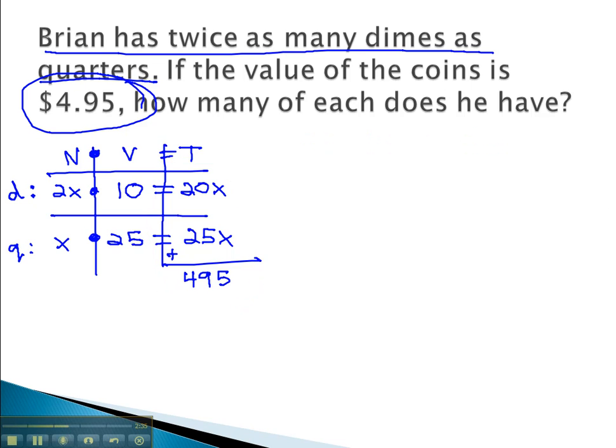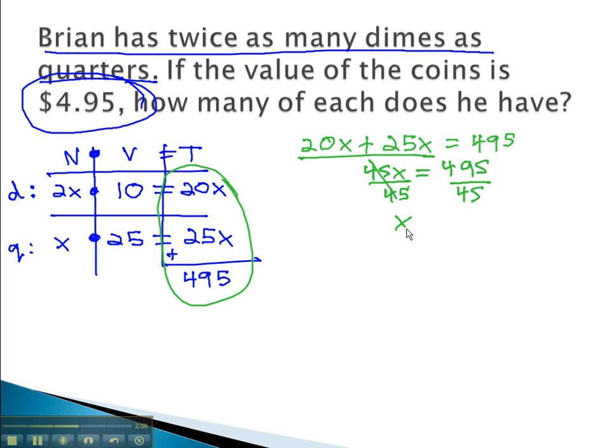We now have an equation we can solve in order to answer the question. We can solve this equation quickly by combining like terms to get 45x equals 495, and then finally dividing by 45 to find out that x is equal to 11.